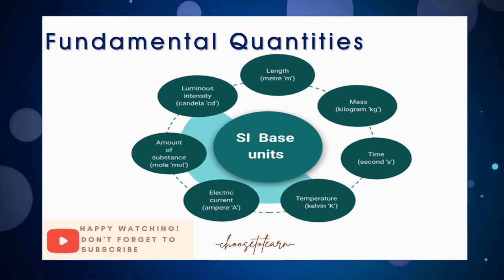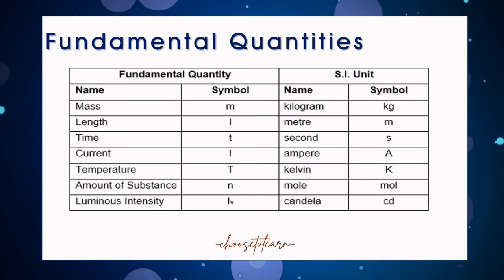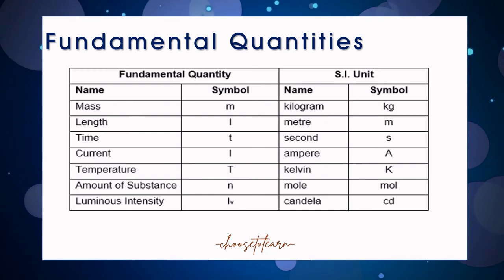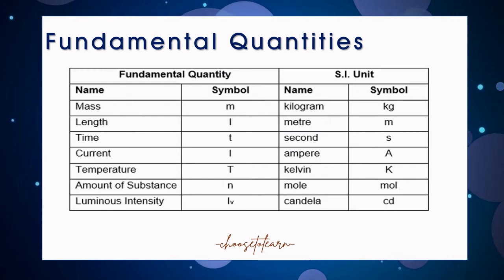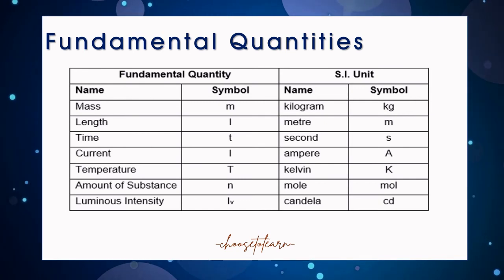There are seven fundamental units in the SI system. Each quantity has corresponding symbol and the corresponding specific unit, as shown in the picture. But for this episode, we will focus only on mass, length, time, and temperature.